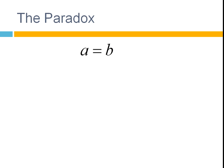So we'll multiply this through by A, which is perfectly reasonable to do, and we subtract B squared from both sides, which gives us that expression, A squared minus B squared equals ab minus B squared.